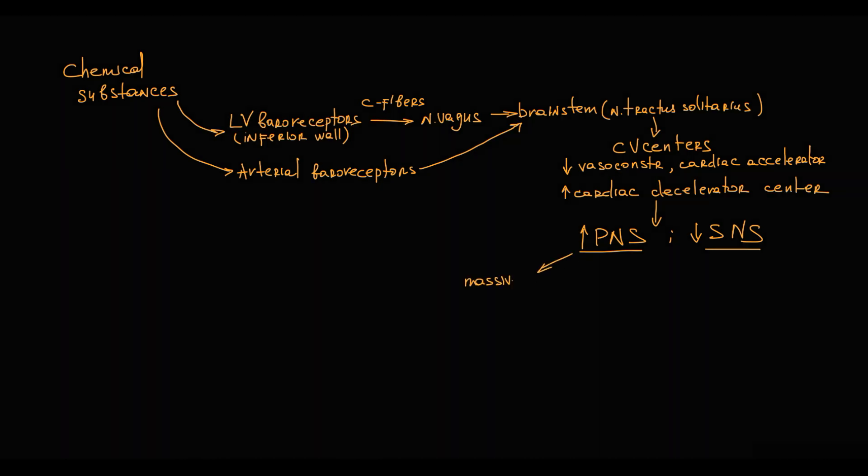This increase in parasympathetic nervous system activity first of all causes massive vasodilation, resulting in decreased systemic vascular resistance. Also, through the vagus nerve it inhibits the sinoatrial node, causing decreased heart rate. This is the mechanism of bradycardia.